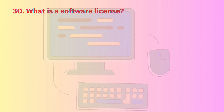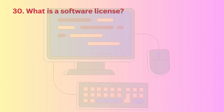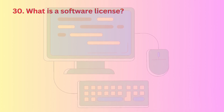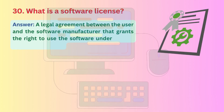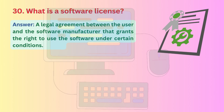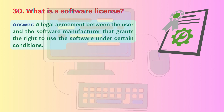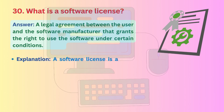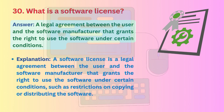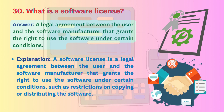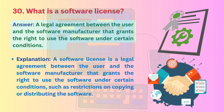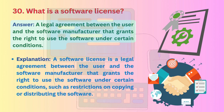Question 30: What is a software license? A software license is a legal agreement between the user and the software manufacturer that grants the right to use the software under certain conditions, such as restrictions on copying or distributing the software.